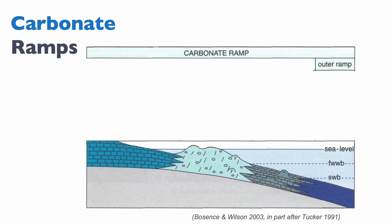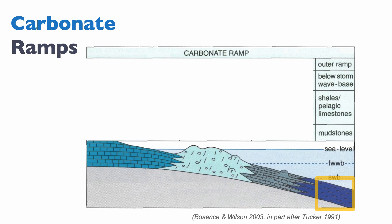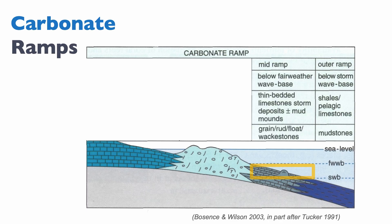We have the outer ramp, which is below the storm wave base, and because of that it is dominated by shales, pelagic limestone, and mudstone in terms of Dunham textures. Then we have the mid ramp, which is still before the shoal. The mid ramp is below fair weather wave base but above storm wave base, so what you end up having are thin-bedded limestones representing storm deposits. You can also have mud mounds present. The typical Dunham textures are grainstone, rudstone, perhaps floatstone, or even wackstone.